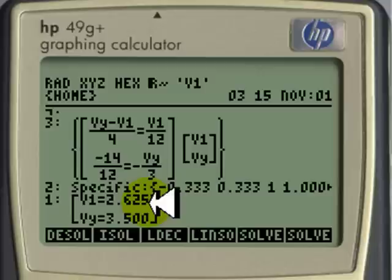V1 is 2.625 volts and Vy is 3.5. The output of the second amplifier is 3.5 volts. But V1, which is Vn for the first op-amp, is 2.63 volts.